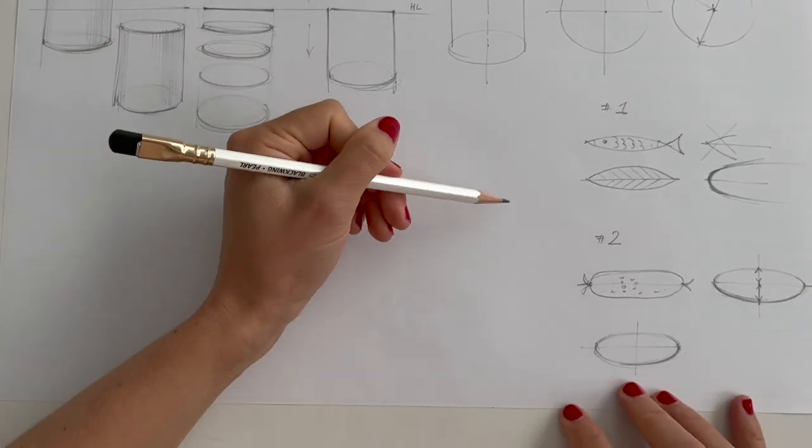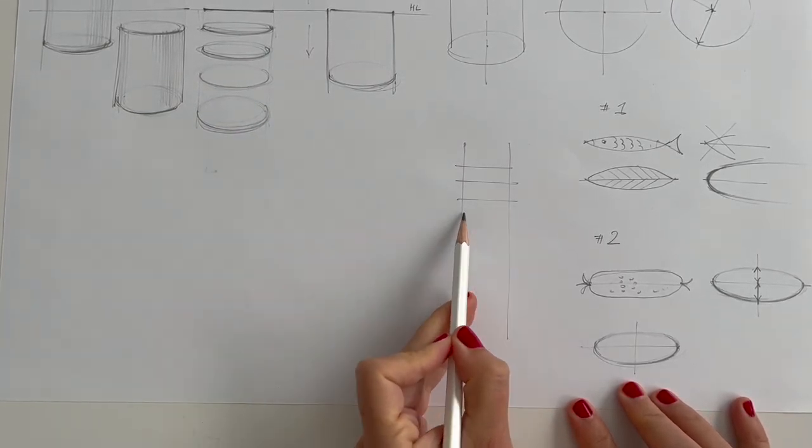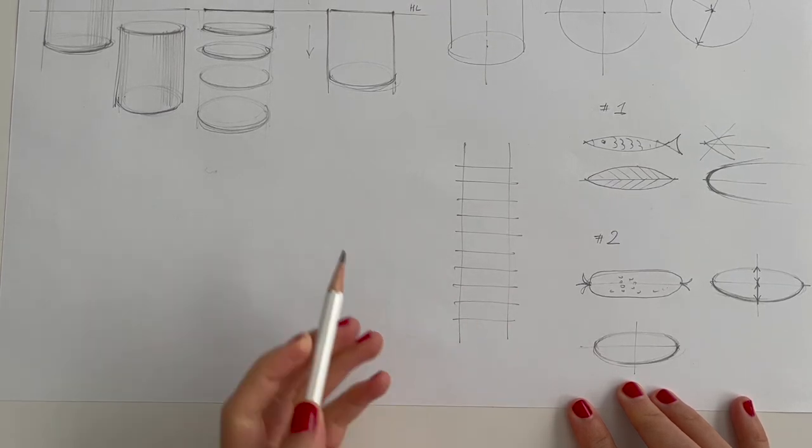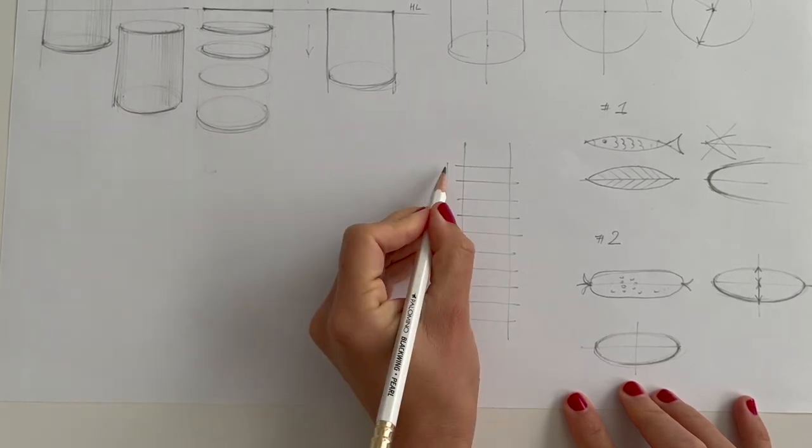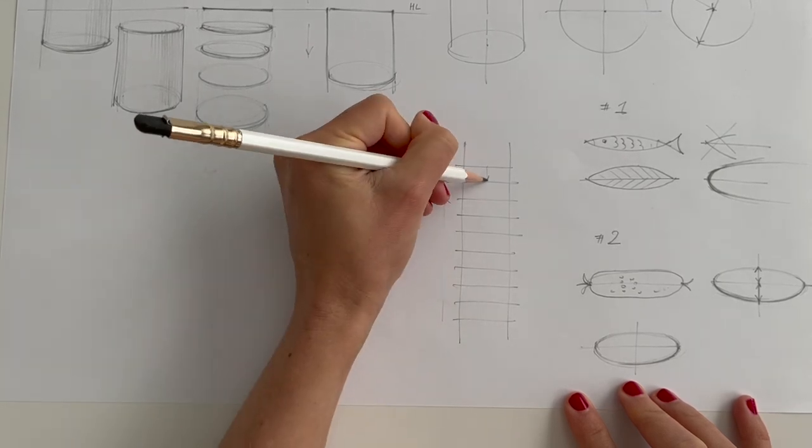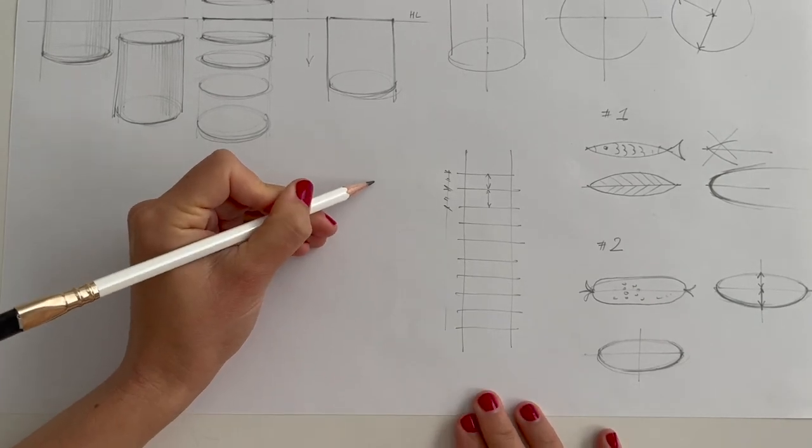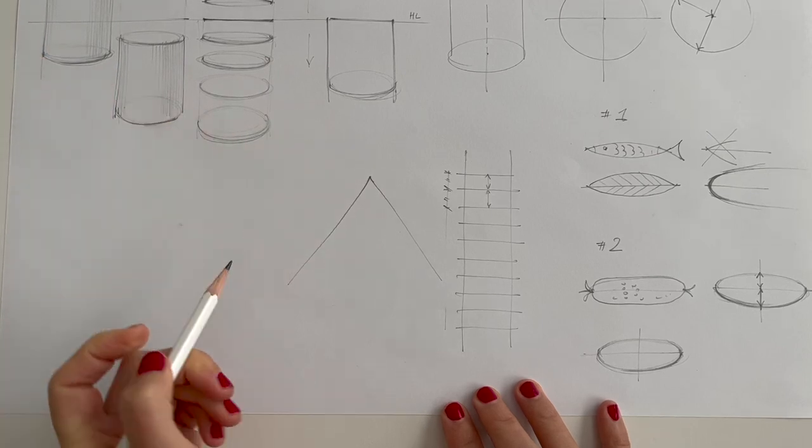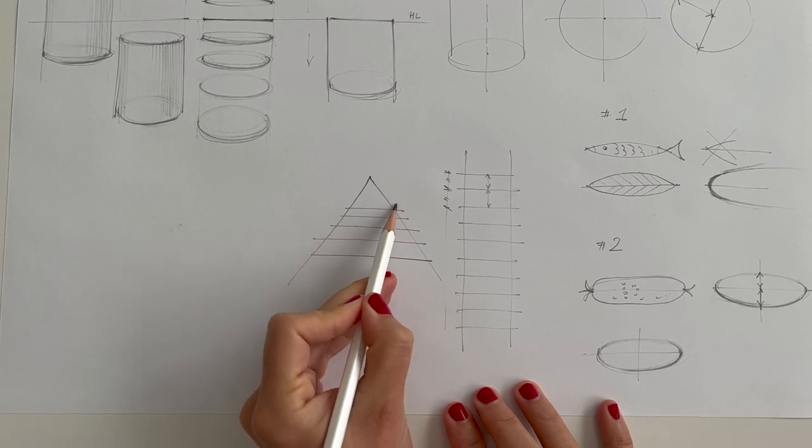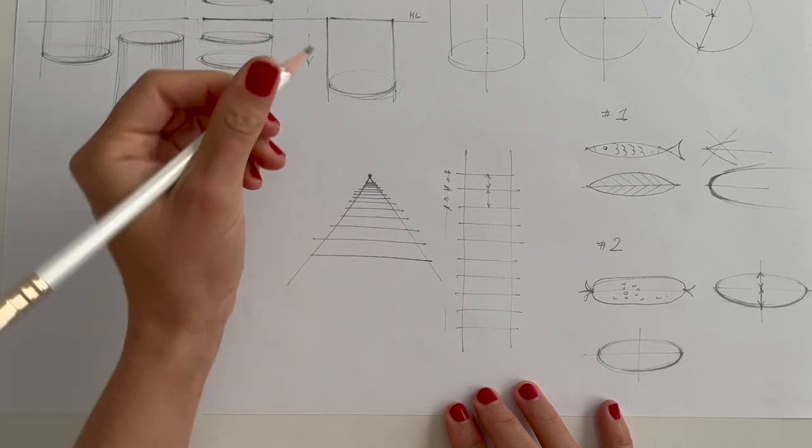Why? Because of the perspective. Let me illustrate this principle by this classical example of the railroad. So we have these rails, which are the equal distance from each other, right? So these dimensions, they are exactly the same. But what happens if we look at this railroad as a human being? Of course, we will see that it will recede in the distance and it will finally meet in this vanishing point on the horizon line. Vanishing point. V-P. The same, exactly the same principle applies here.